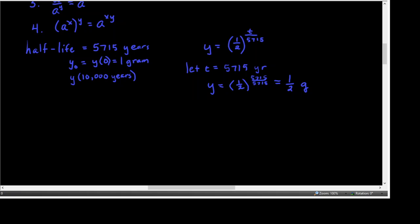So let's look at this specific value. What is y at 10,000 years? Using our model, that's going to be 1/2 raised to the 10,000 over 5,715. Put that in your calculator and you get 0.297 grams. So that is an example of half-life.